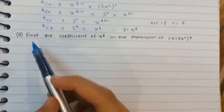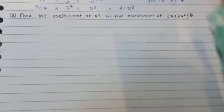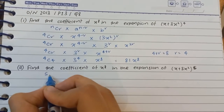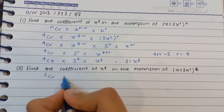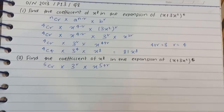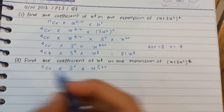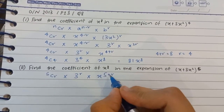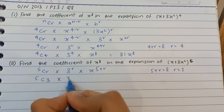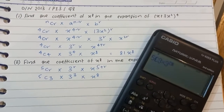For the second part, find the coefficient of x raised to the power 8 in the expansion of x plus 3x squared raised to the power 5. It's the same thing except the power is now 5 instead of 4. Using the same formula in expanded form: 5Cr into 3 raised to the power r into x raised to the power 5 plus r. Setting 5 plus r equal to 8 gives r equal to 3. So it's 5C3 into 3 to the power 3 into x to the power 8, which gives 270x raised to the power 8.